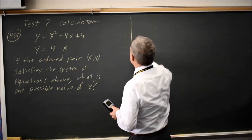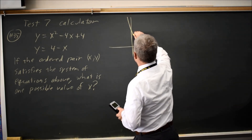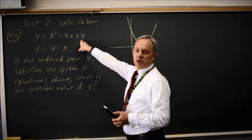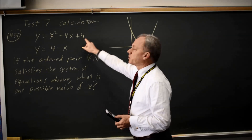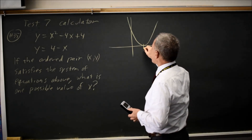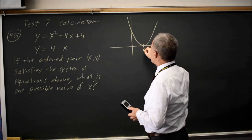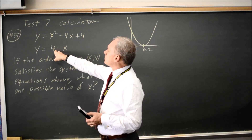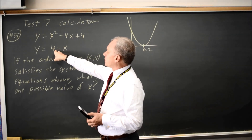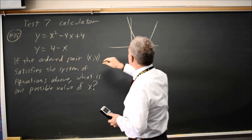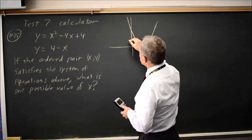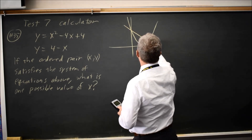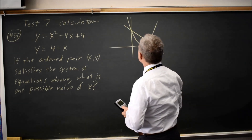You get a graph that looks something like this. This is x minus 2 quantity squared, so it's a parabola touching the x-axis at x equals 2. And this is a line with an intercept of 4 and a slope of negative 1.